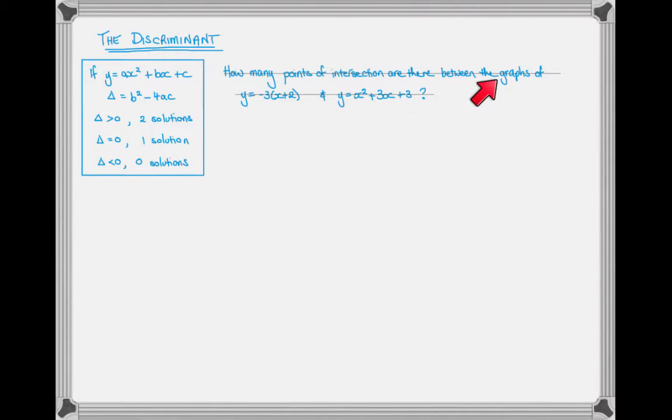Instead of asking you just how many solutions are there, or how many points of intersection are there, we replace one of the coefficients with an unknown, and then you're asked to solve for that unknown.